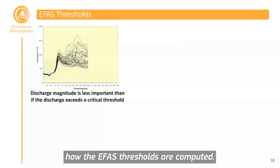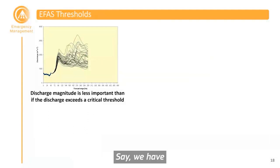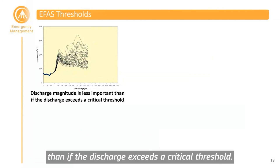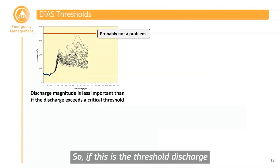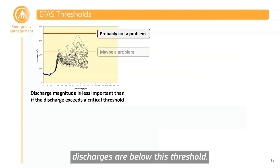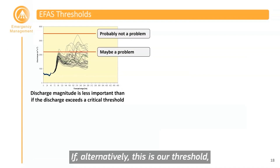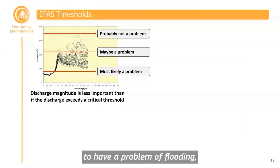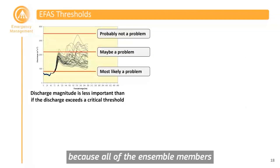Another important aspect is how EFAS thresholds are computed. For EFAS, the discharge magnitude is less important than whether the discharge exceeds a critical threshold. If a threshold discharge for flooding is set and all the forecasted ensemble discharges are below it, we probably won't have a problem. If some ensemble members start to exceed the threshold, there may be a problem. If all ensemble members are above the threshold, we are most likely going to have a flooding problem.